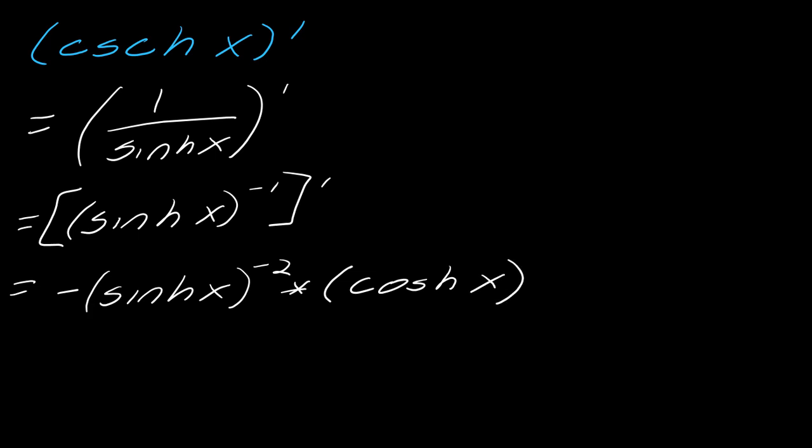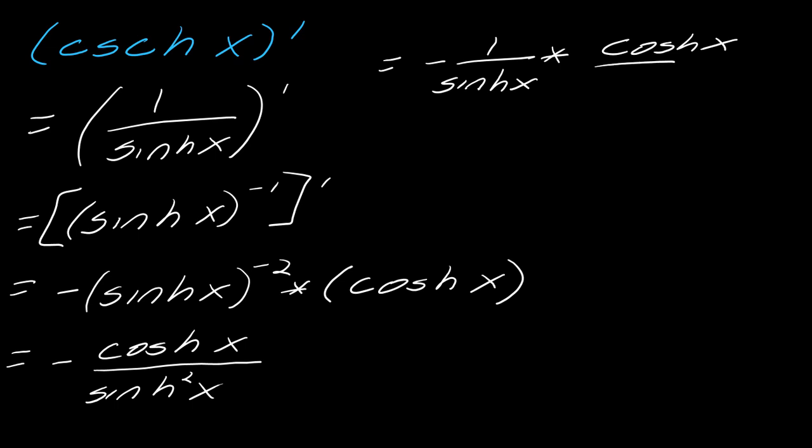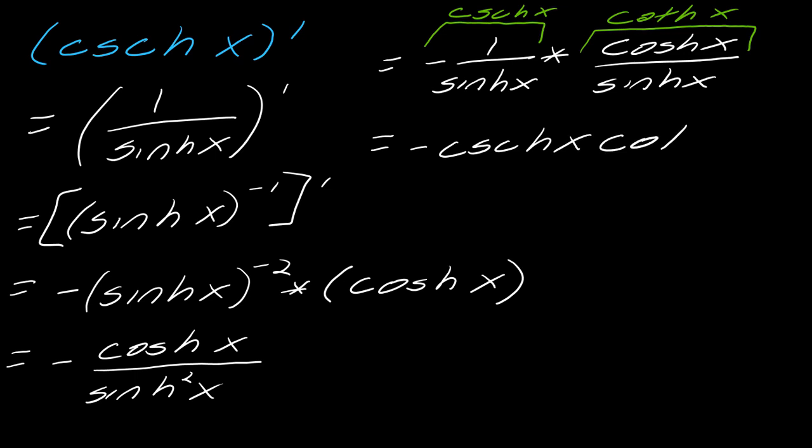Now I just have to work with this and sort all of this out. This turns into negative cosh x over sinh x squared. This I can break up then into two pieces. This will be negative 1 over sinh x, and then we've got the cosh x over sinh x. Now looking at it this way, this part here is the hyperbolic cosecant, and then this is the hyperbolic tangent. So this equals negative hyperbolic cosecant hyperbolic cotangent. There's your derivative in this case.